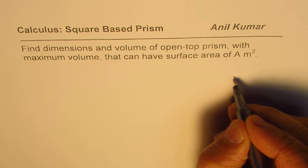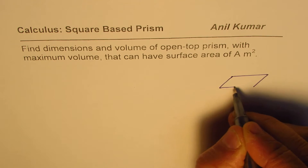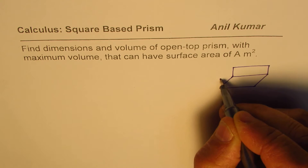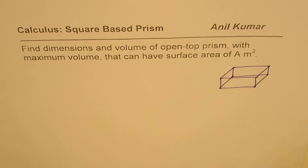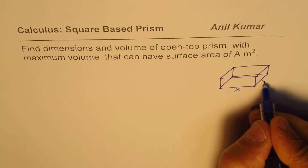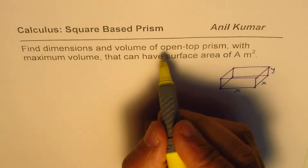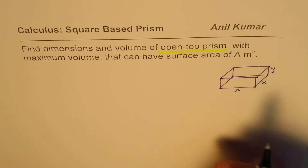Let me first sketch the open-top prism with a square base. The base has side length and width each equal to X units, and the height is Y. So we have a rectangular prism with dimensions X, X, and Y, and this is an open-top prism. We are given the surface area as A square meters.